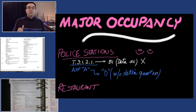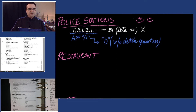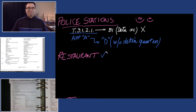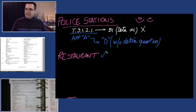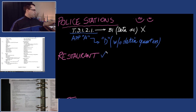Let's move on to another one. The next one I want to do is restaurant. Now by now you've probably figured out that there's going to be a twist to this. What we're going to do is apply what we learned from police stations and start with Appendix A first. So let me bring up Appendix A.